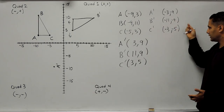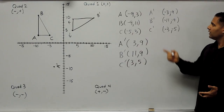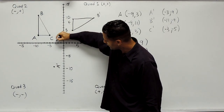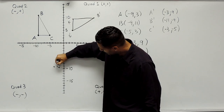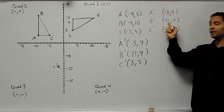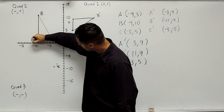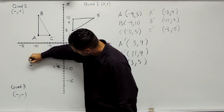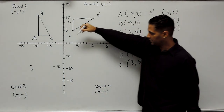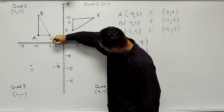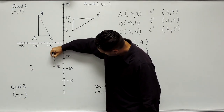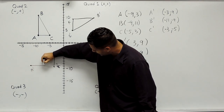Now that we've done that, all we have to do is plot these points on the coordinate plane. We go to negative 3, negative 9 — go left 3 and down 9 — that's the new location of A. Next, for negative 11, negative 9, go left 11 and down 9 — that's the new location of B. For point C, go left 3 and down 5 — that's the new location of C. Then we connect our points, and that gives us our rotated shape.